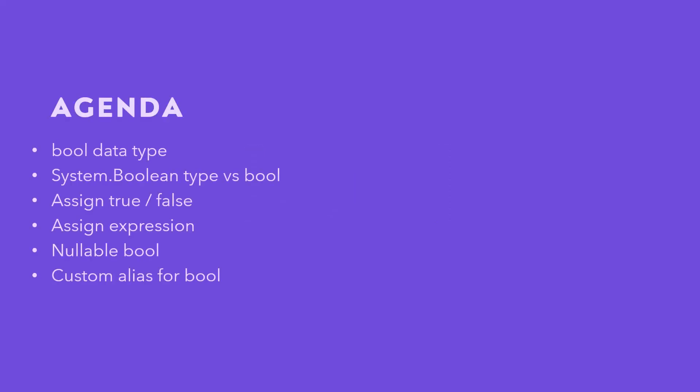Let's talk about the Boolean data type. In this video, we will learn about the Boolean data type, understand the difference between System.Boolean and the bool keyword, how to assign true and false values, how to assign values using an expression, how to use the nullable Boolean, and how to create a custom alias for Boolean or System.Boolean.